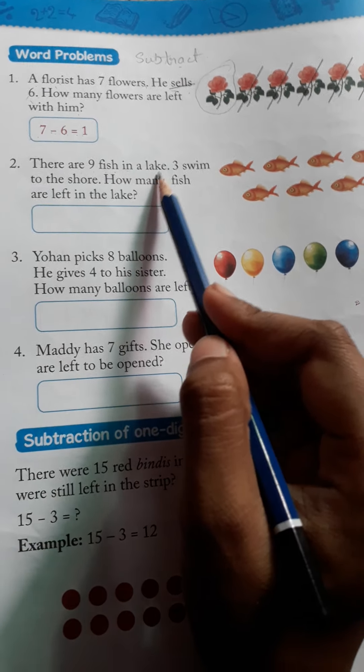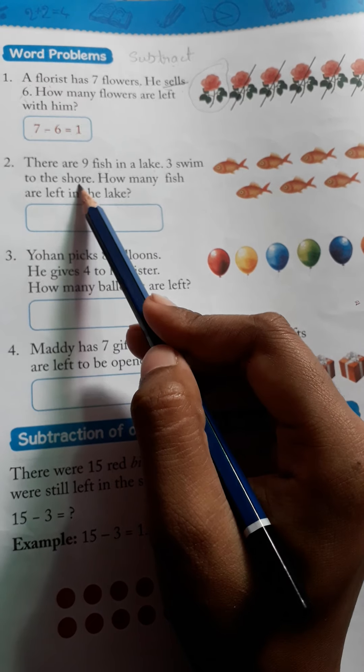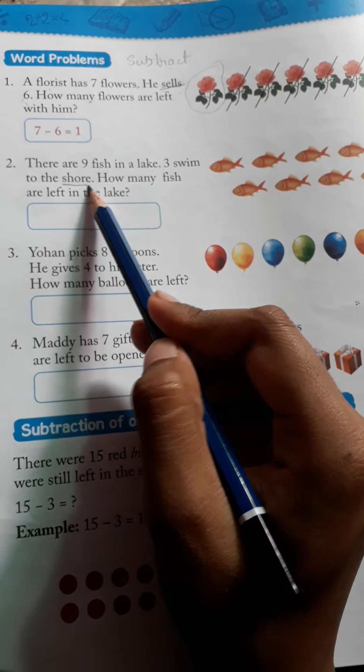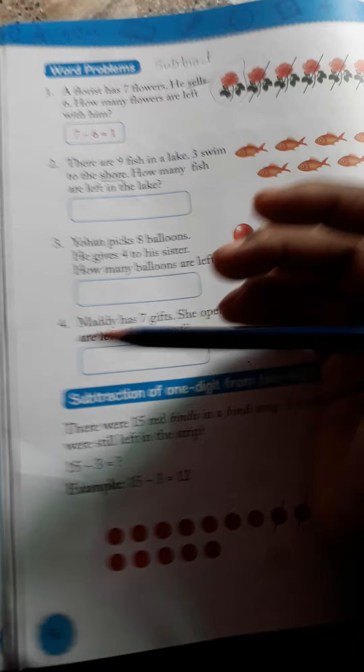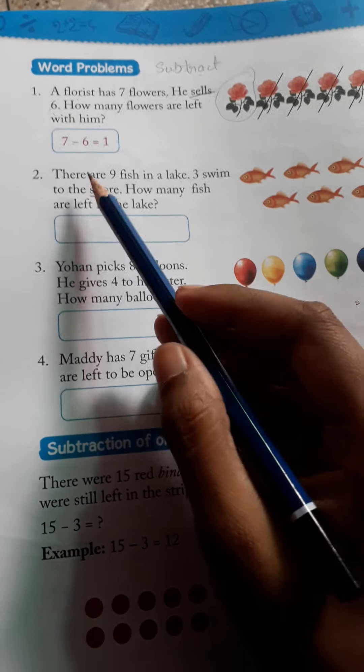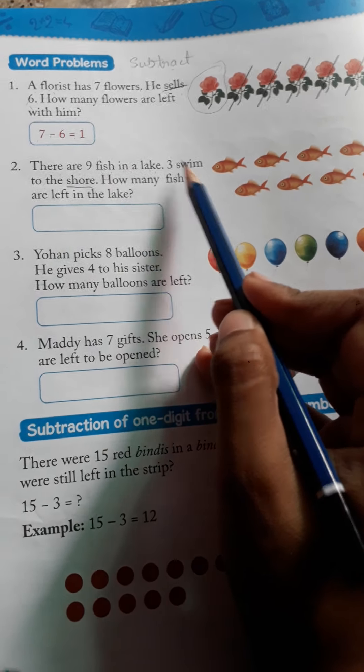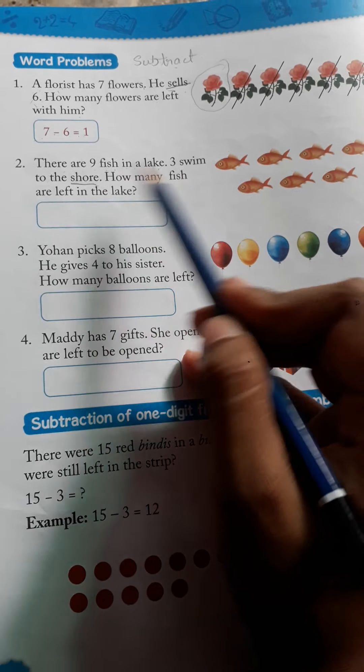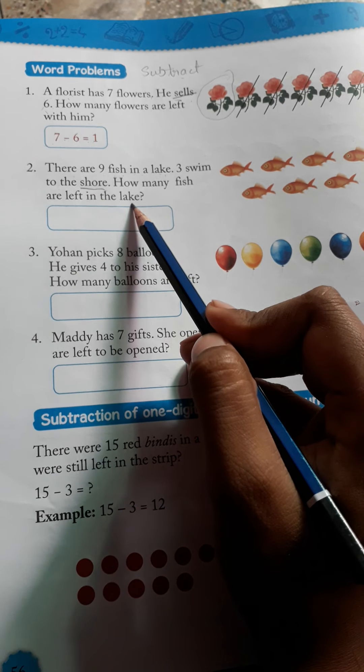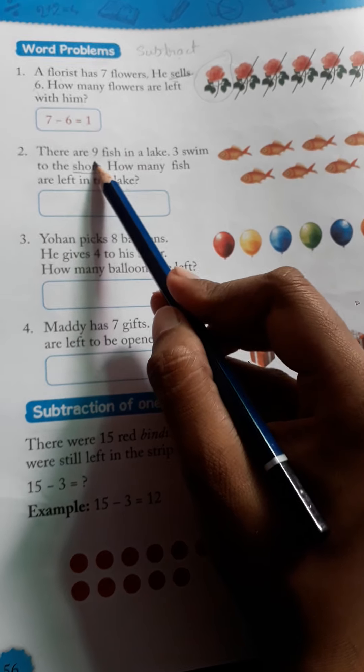There are 9 fishes in a lake. 3 swim to the shore. Shore means the side near the water. There are 9 fish in a lake, 3 swim to the shore. How many fish are left in the lake? Now, the total in the lake was 9 fishes.